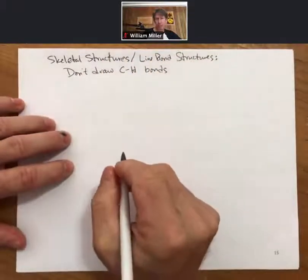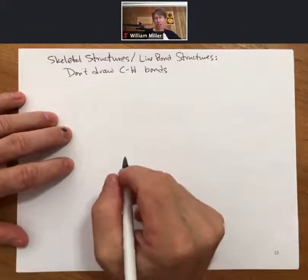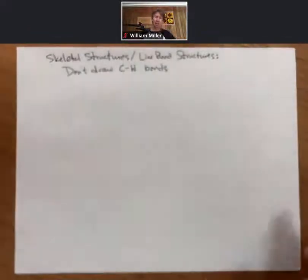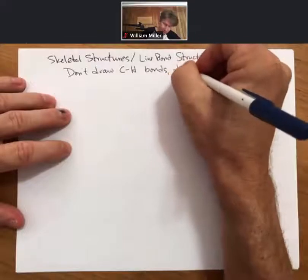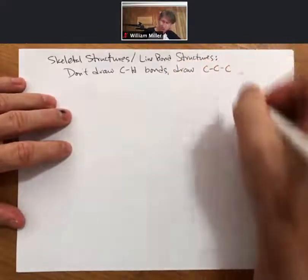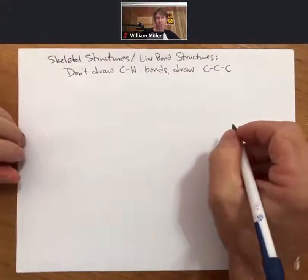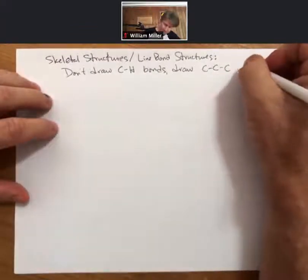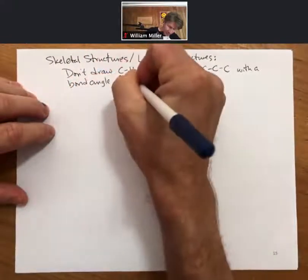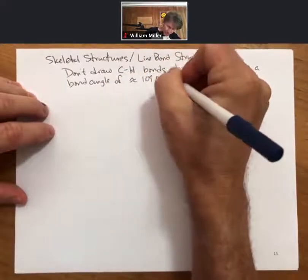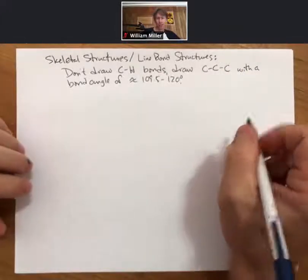The other main thing as we go through skeletal structures is that when you draw a chain or a line of carbon carbon bonds, you'll draw carbon carbon carbon bonds with a bond angle somewhere between 109.5 and 120 degrees. And we'll talk about why those numbers in a future lecture outline.